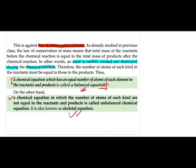An unbalanced chemical equation is one in which the number of atoms on the reactant side and the product side are not equal. This kind of equation is also known as a skeletal equation.